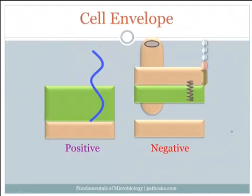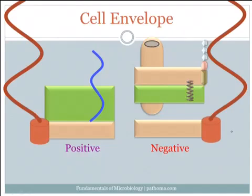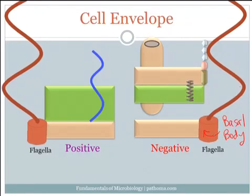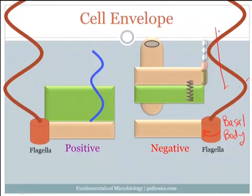Now let's talk about things that both gram-negatives and gram-positives have in common. First are flagella — little tail-like structures, hollowed-out tubes attached to a basal body that anchors these tails to the cell envelopes. This basal body acts like a rotor, which when it rotates causes the tail to undulate and propels the bacteria through a medium, possibly towards a nutrient source or away from danger.